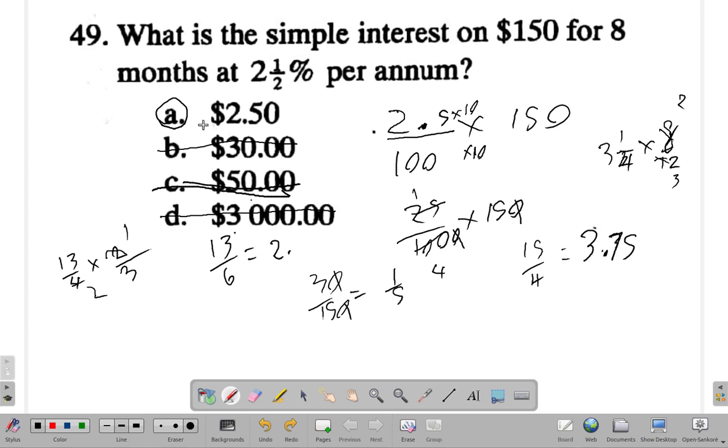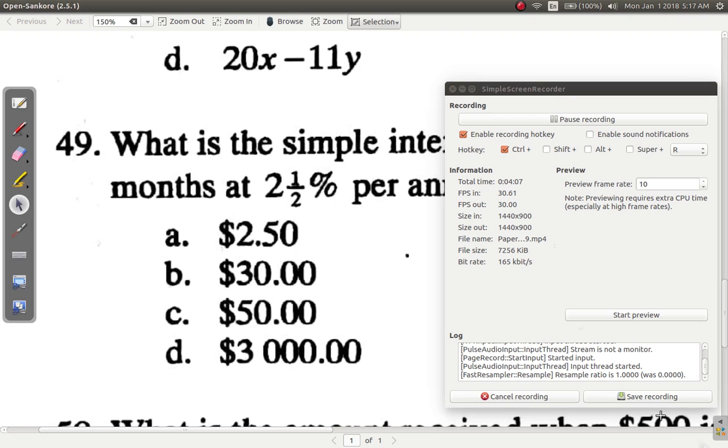So you could see that the only answer, without doing all of this, the only answer that would be valid is A. So question 49, answer is A.